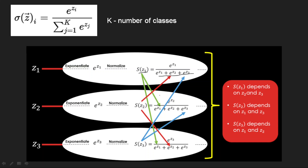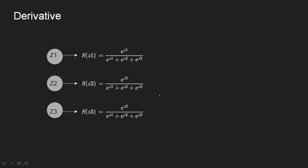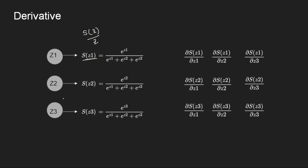Now, if I want to calculate the derivative of Softmax for doing backpropagation — that is how training happens — let us consider the output layer with Softmax outputs. I need to calculate the derivative of S(Z) with respect to Z. If I want to calculate the derivative of S(Z1) with respect to Z1, we cannot consider only Z1 because it also depends on Z2 and Z3. So I need to calculate the derivative of S(Z1) with respect to Z1, Z2, and Z3. The same applies for S(Z2) and S(Z3) — we need to compute all these terms.